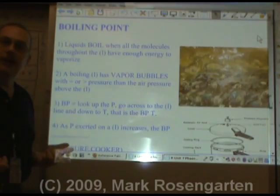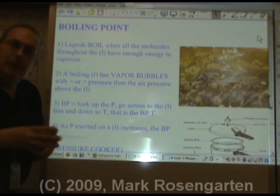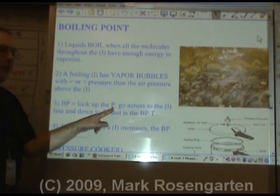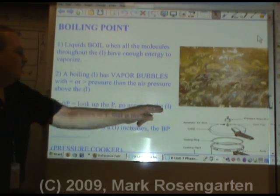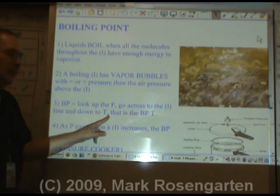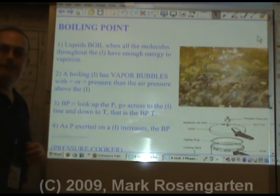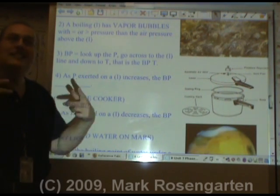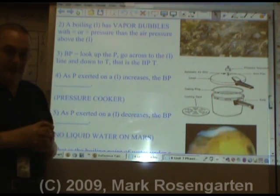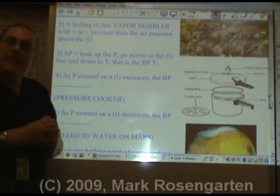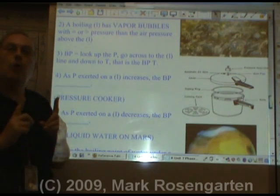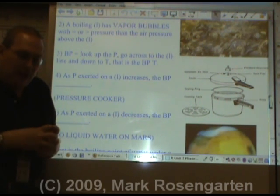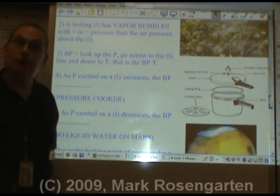So how do you know when a liquid has enough vapor pressure to form vapor bubbles that will survive? To find the boiling point, you look up the pressure, go across to the liquid line you're interested in, and then down to the temperature — that's the boiling point temperature. If you raise the pressure, it's going to be harder for those vapor bubbles to form, and therefore the boiling point will go higher, because you need to heat the molecules more to overcome that excess pressure.